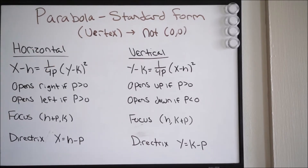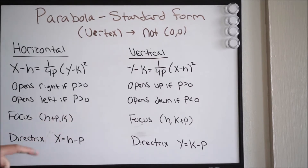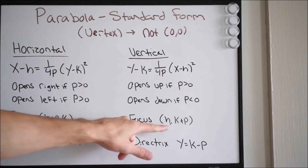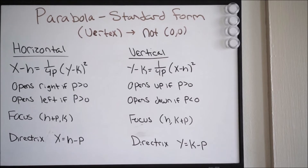Now the vertex is not at the origin. Take a look at how our equation differs — notice we now have this h and k value, and we know what that stands for because we dealt with circles, ellipses, hyperbolas. h and k is just going to be your center or your vertex point. So h and k is a little bit different, but everything else essentially remains the same, except for your focus and directrix. For a horizontal parabola, the focus is (h+p, k) and the directrix is x = h−p. For a vertical parabola, the focus is (h, k+p) and the directrix is y = k−p.